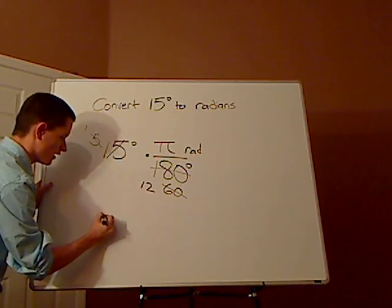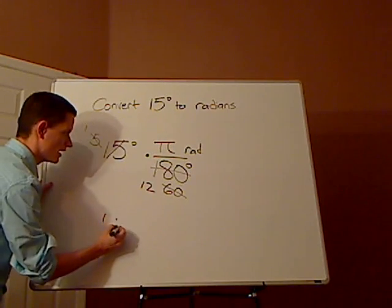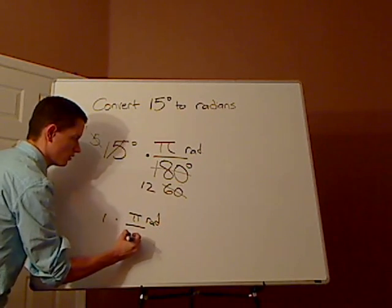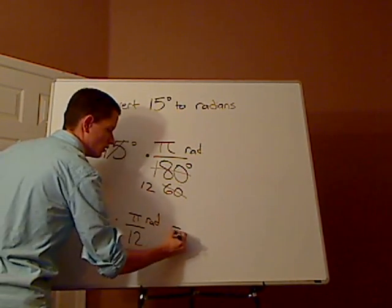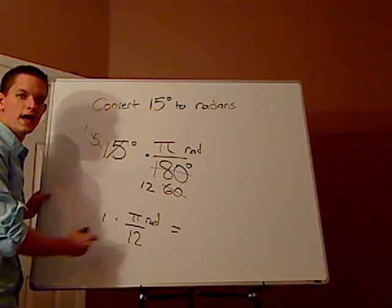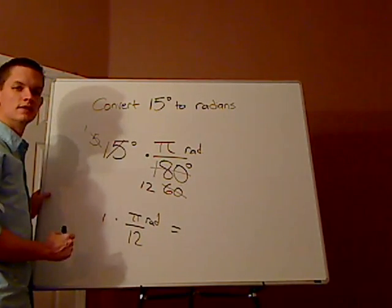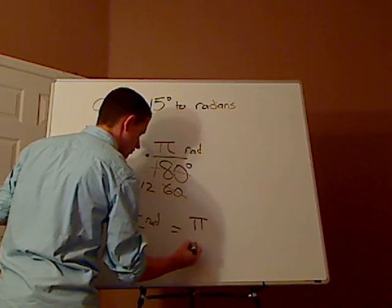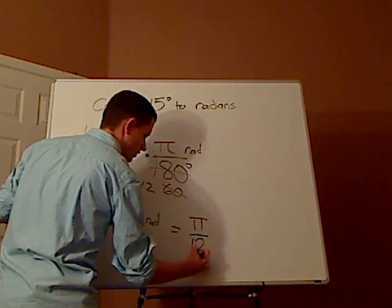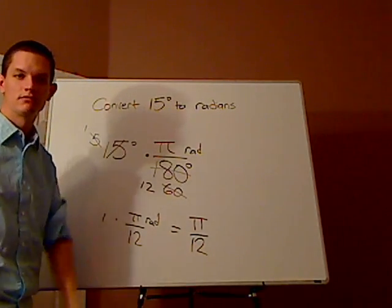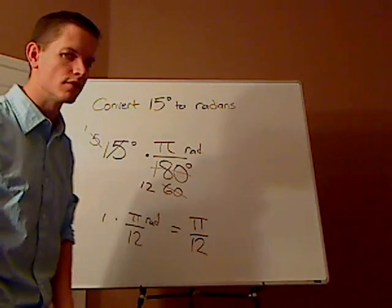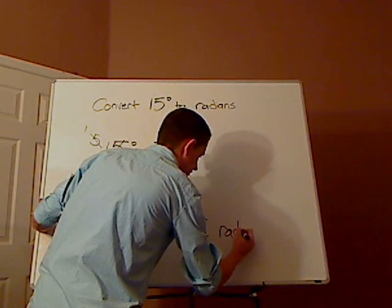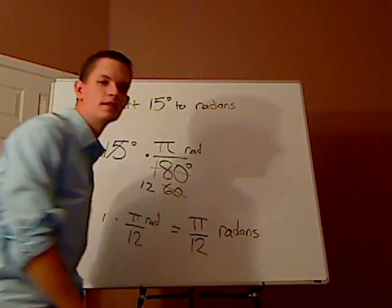So let me rewrite that. So I have one times pi radians over twelve. And so when I multiply that and I multiply across, that's going to give me what? Right. It's going to give me pi over twelve. And that's in radians. That's it.